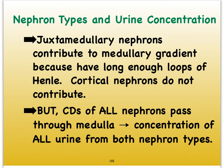I've been mentioning those juxtamedullary nephrons over and over again, reminding you that they have long loops of Henle that dip deep down into the medulla. Because of that, they can build that medullary gradient and therefore allow for us to produce a urine that can become very concentrated if ADH is present. Cortical nephrons do not contribute to the medullary gradient, even though 85% of the nephrons are cortical. Only about 15% of the nephrons are juxtamedullary.